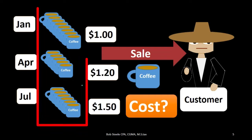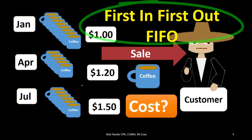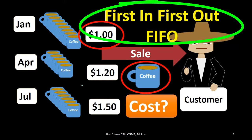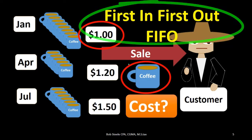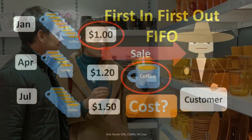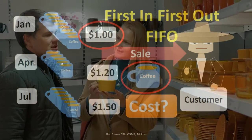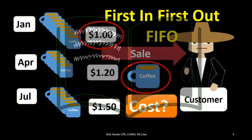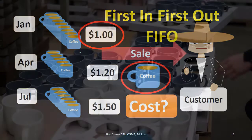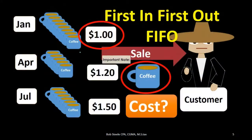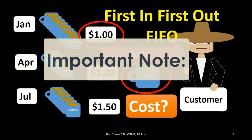We're not going to use specific identification. First, let's use first in first out. Under that assumption, we assume that coffee mug was taken from the earliest batch — at one dollar cost rather than $1.20 or $1.50. This is the most intuitive method for most people because it usually follows what we think of as a normal flow of inventory — we try to sell the oldest types of inventory first, even if they're non-perishable like a coffee mug.